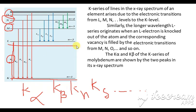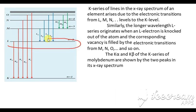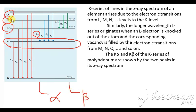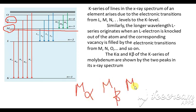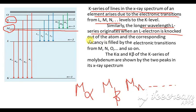Similarly, if a vacancy is created in the L-shell and filled from the M-shell, it is called L-alpha. If filled from N-shell, it is L-beta; from O-shell, L-gamma; and so on as L-delta, etc. In the same way, if a vacancy is created in the M-shell, filling from the next shell gives M-alpha, then M-beta, M-gamma, and so on. The K series of lines in the spectrum are emitted from L, M, and N shells. K-alpha and K-beta of the K series are shown by the two peaks in the spectrum.